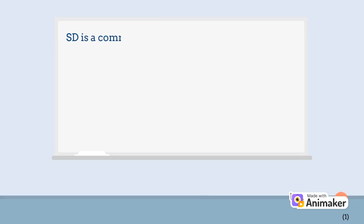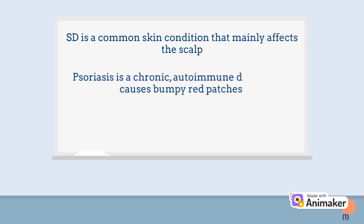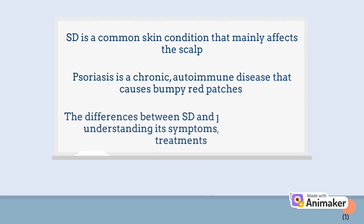SD is a common skin condition that mainly affects the scalp, causing itchy red patches and greasy scales. Psoriasis, on the other hand, is a chronic autoimmune disease that causes bumpy red patches covered with white scales. In this video, we will discuss the differences between SD and psoriasis through understanding its symptoms, etiology, and treatments, focusing mainly on its localization on the scalp.